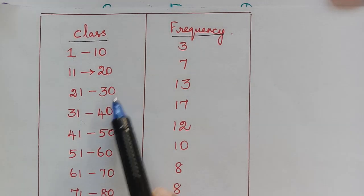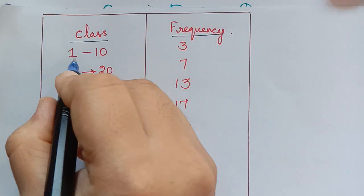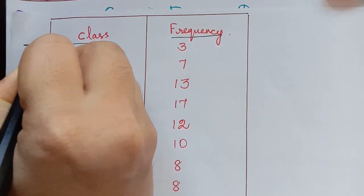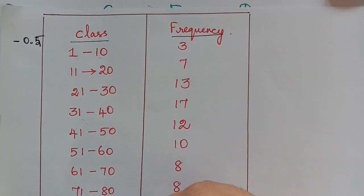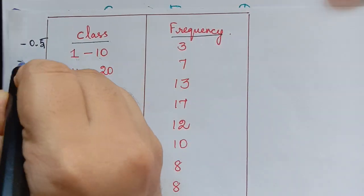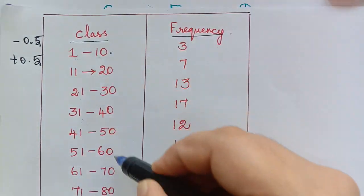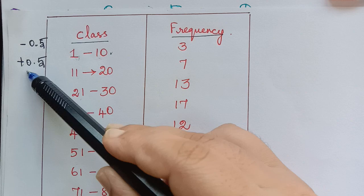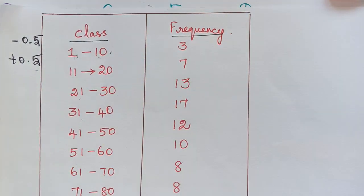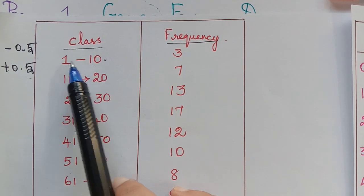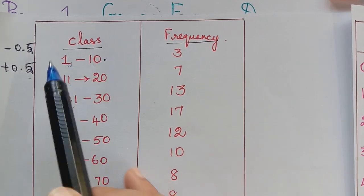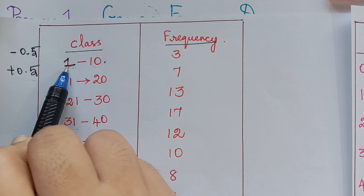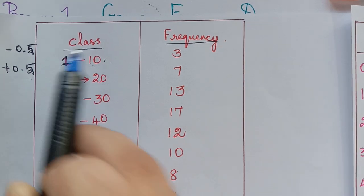So first we have to convert these class intervals into true class limits. To find the true class limits, we have to subtract 0.5 from all the lower limits and add 0.5 to all the upper limits.